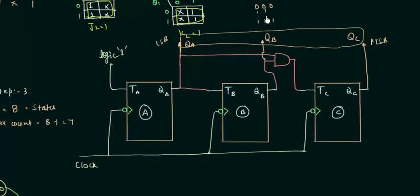QA, QB, and QC are the outputs of the counter — QA is the LSB and QC is the MSB. They start from 000 and end at 111. In this way you design a 3-bit synchronous counter. I hope you understood, and if you have any doubt you can ask in the comment section.